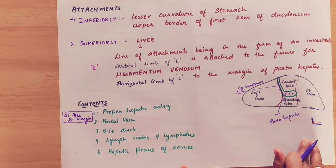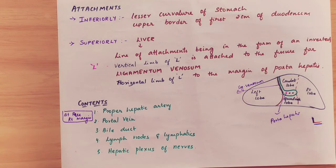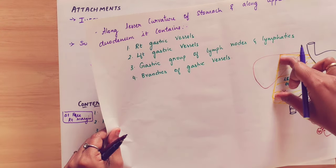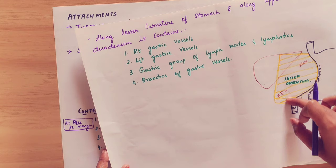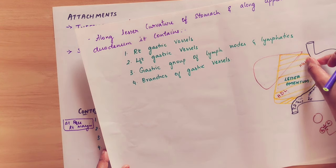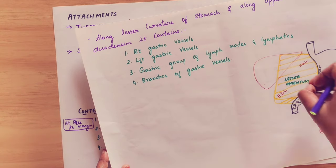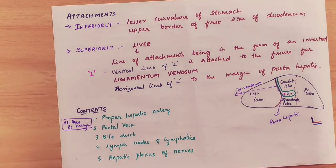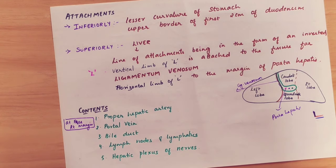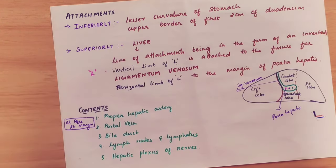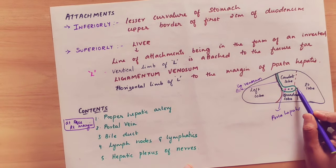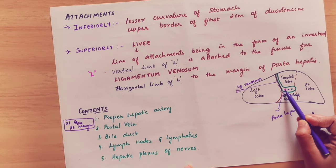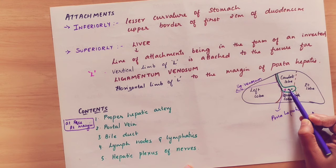Coming to the contents of the lesser omentum. We divide it into two parts. At the free right margin, the following structures are present: the proper hepatic artery, the portal vein, and the bile duct — these three are the porta hepatis structures. Also present are lymph nodes, lymphatics, and the hepatic plexus of nerves.